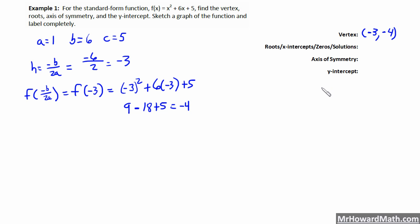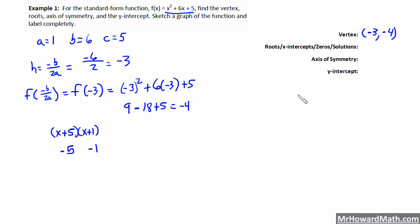Now to find the roots, we can either factor or use the quadratic formula. This will factor pretty easily — we want two numbers that multiply to 5 and add to 6, which is 5 and 1. So it factors to (X plus 5)(X plus 1). Our roots are opposite of those signs, so we have one root at negative 5 and one root at negative 1.